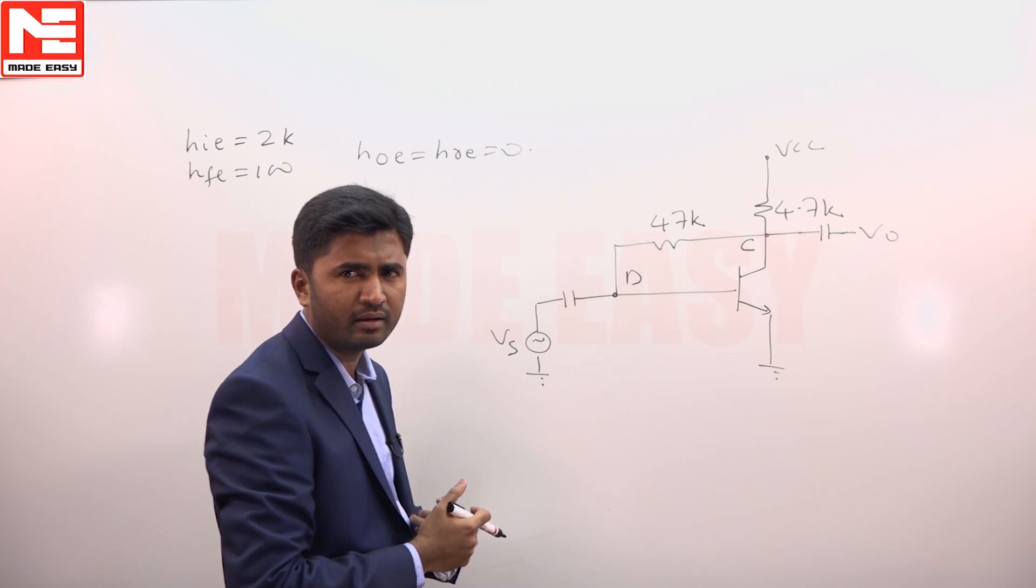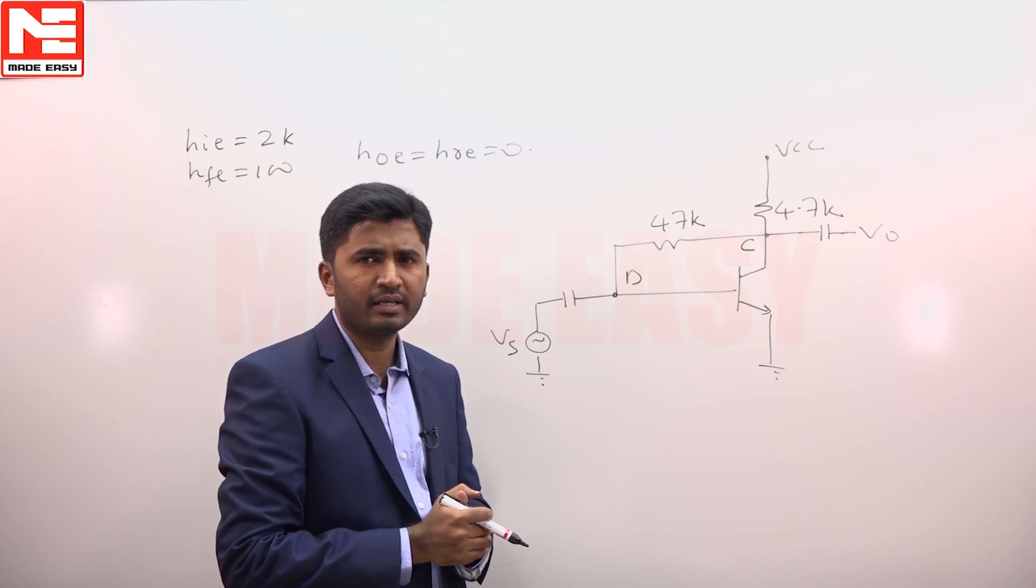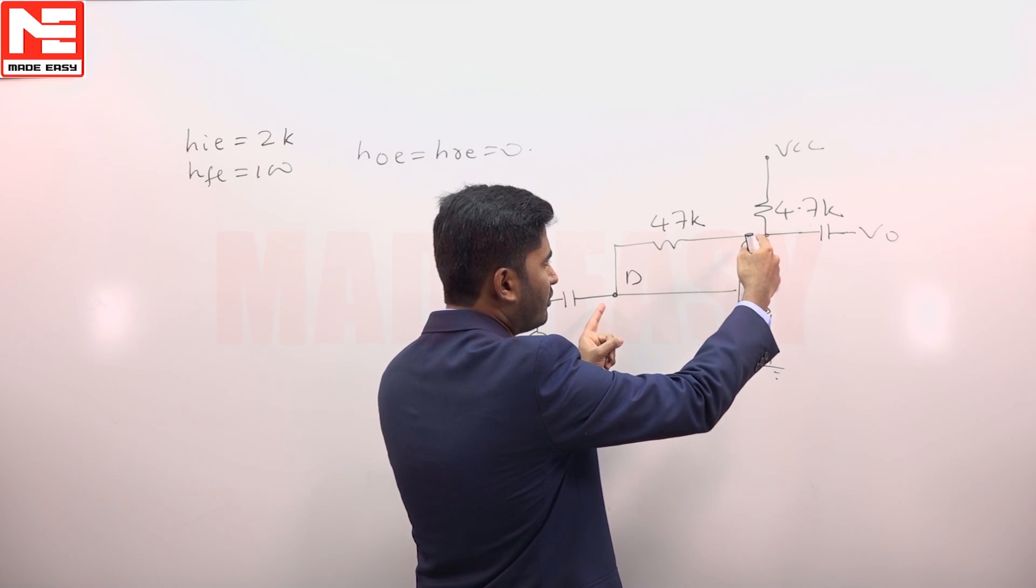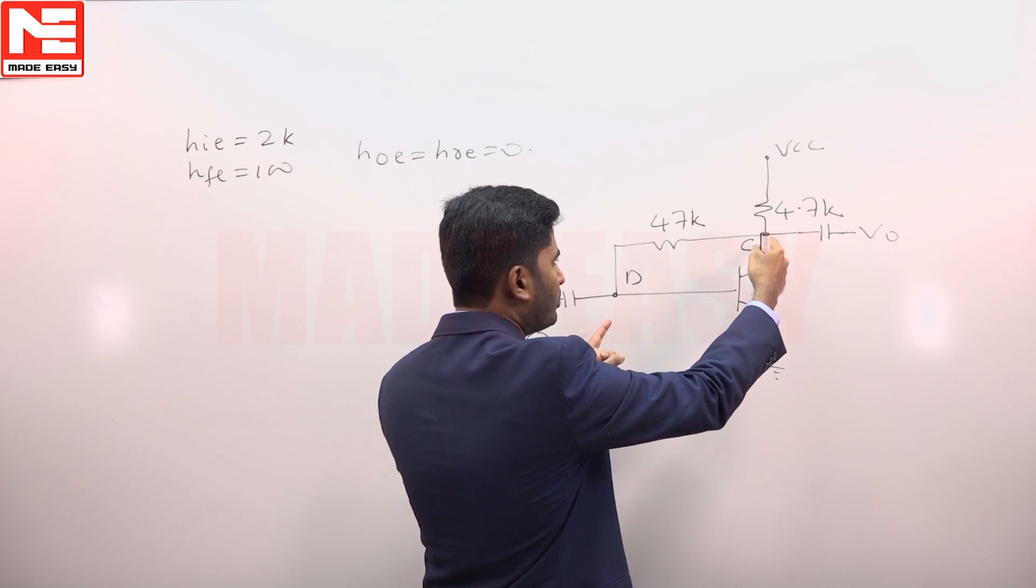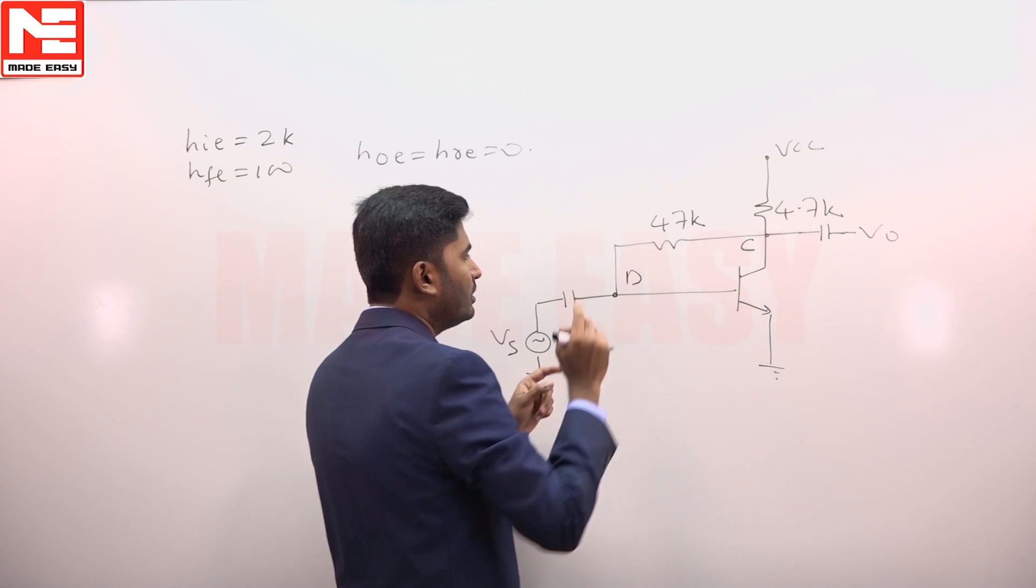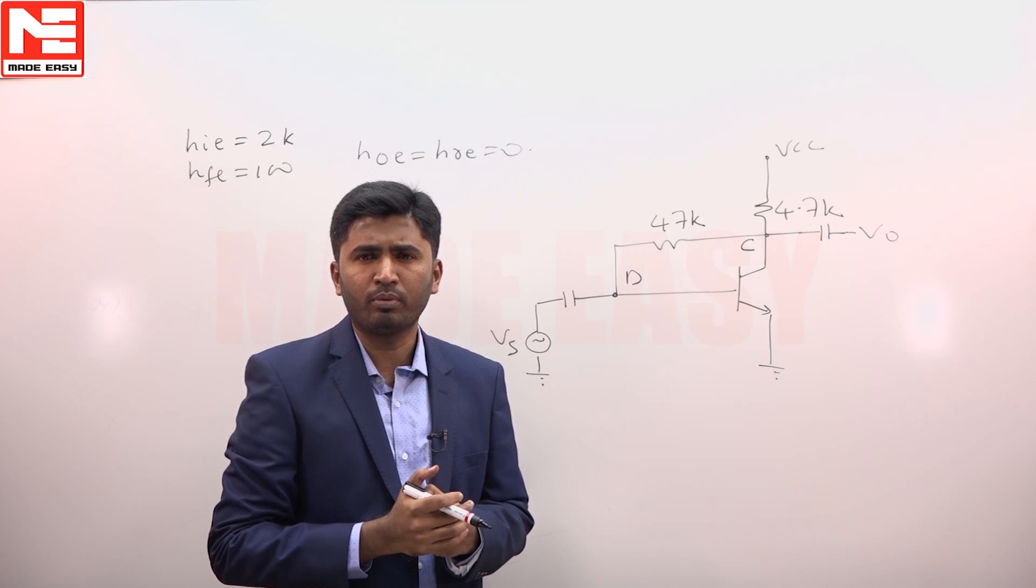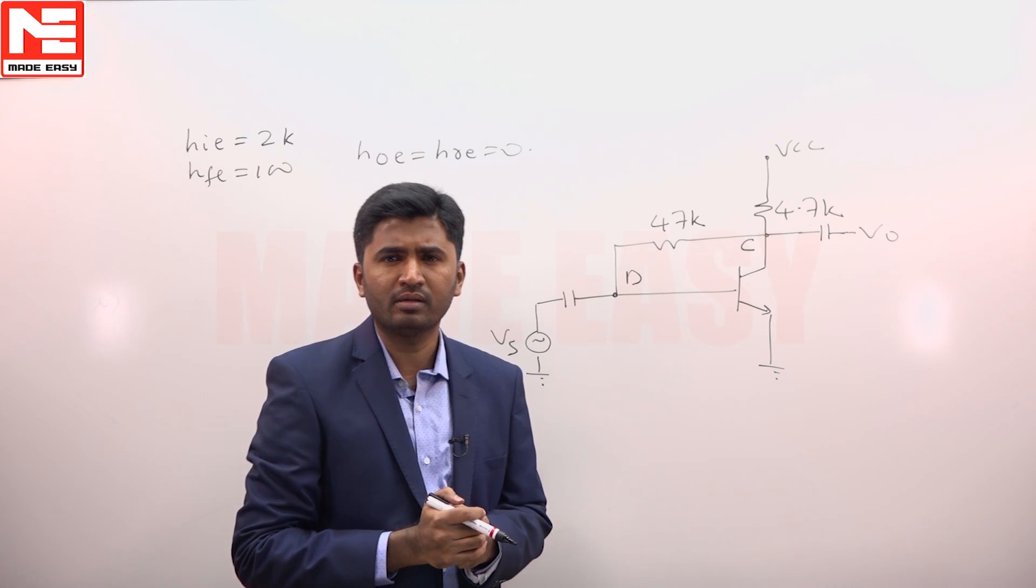So this is nothing but a common emitter amplifier in which we want to know voltage gain. And in this common emitter amplifier there is a resistor of 47k between output terminal collector and input terminal base. So whenever there is a resistor between input node and output node we can apply Miller's theorem.